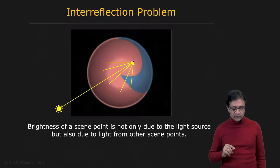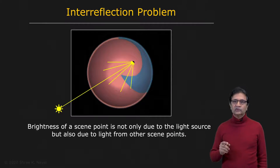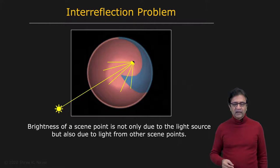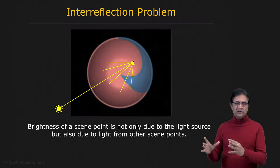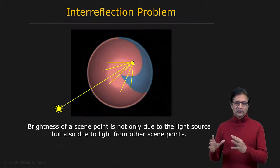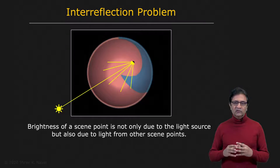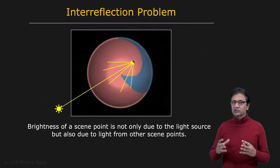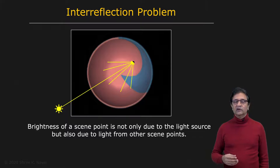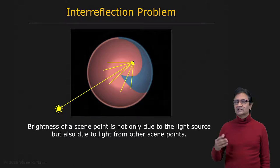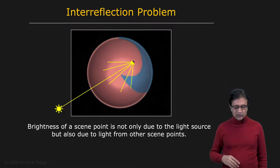So the brightness of a scene point is not only due to the light source, but also due to light from other scene points. This is a harsh reality that we set aside when we develop techniques like photometric stereo, because we don't have an obvious way to tackle the problem. We don't know the object as yet — we don't know what its shape is — and therefore we have no way to tell exactly what these contributions to the brightness are from other points on the object.